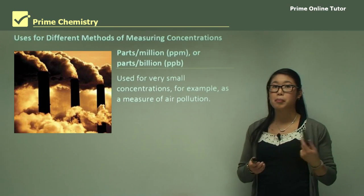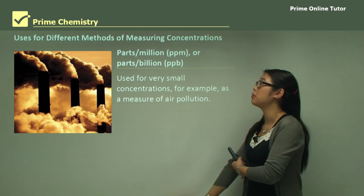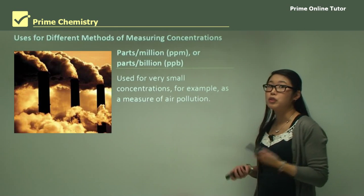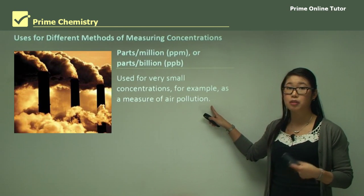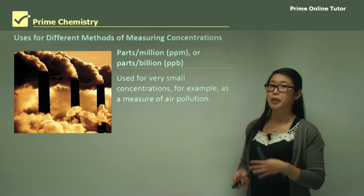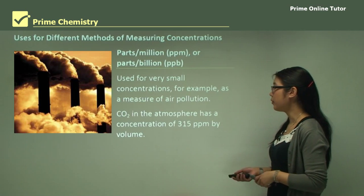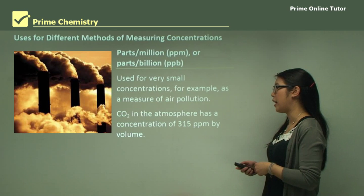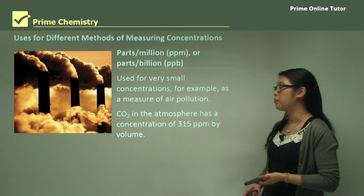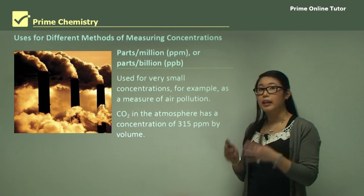Parts per million and parts per billion are very small concentrations — PPM is one milligram per kilogram, and parts per billion is for even smaller concentrations. We usually use it to measure air pollution, because changes are very minute but still cause significant health problems. For example, carbon dioxide in the atmosphere can be expressed as 315 parts per million by volume — the volume of CO₂ in a total volume — since for gases we can't really use moles or weights.